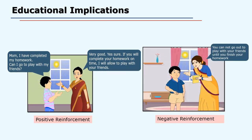Look at a situation where a parent is giving both positive and negative reinforcements. In the positive reinforcement example, the child happily announces to his mother that he has done his homework and wants permission to go and play with his friends. Mom is also very happy and allows him to play. Otherwise, she used to detain the child and make him do homework when his friends played outside, which was something unpleasant.